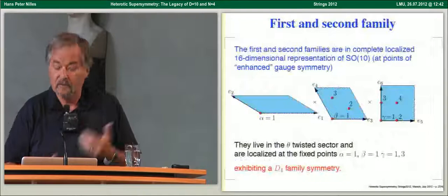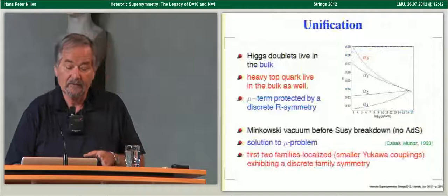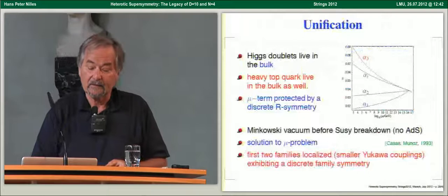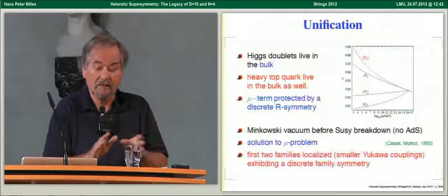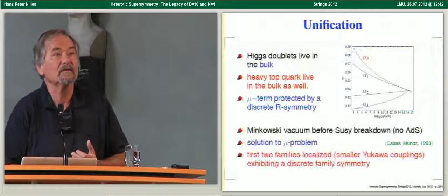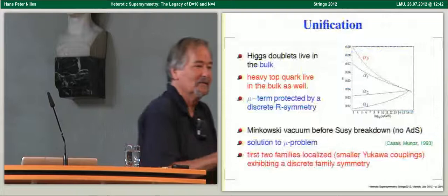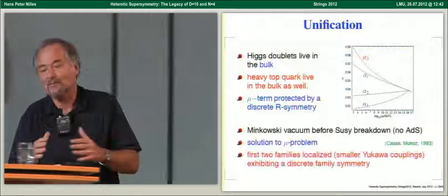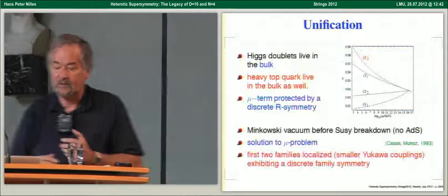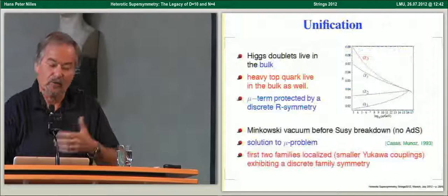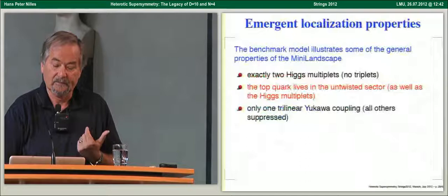So the summary so far: Higgs doublets in the bulk, heavy top quark in the bulk, the mu term protected by an R-symmetry. We have Minkowski vacua before SUSY breaking — that is the solution to the mu problem. A similar solution to the mu problem was considered by Casas and Nunes already in the 1990s. In a supersymmetric vacuum the R-symmetry is unbroken, so it is the ground state being supersymmetric that forbids the mu term. When you break supersymmetry, you get a mu term of order the supersymmetry breaking scale, roughly the gravitino mass.